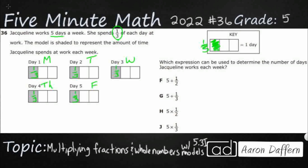So which expression could be used to determine the number of days that Jacqueline works each week? Well, we've got five days, but she doesn't work the full day. She works five sets of one-third. So really, she works five one-thirds. We could add them all up — one-third plus one-third plus one-third plus one-third plus one-third. How many thirds? There's five sets of one-third.